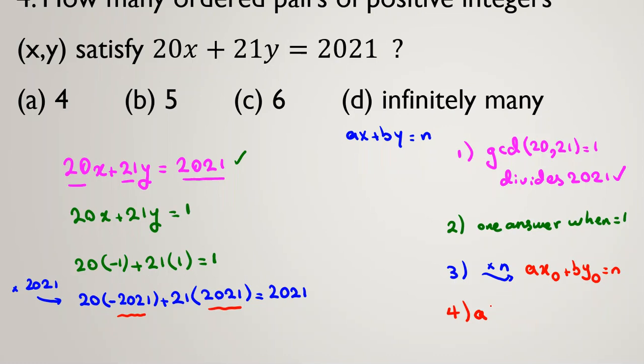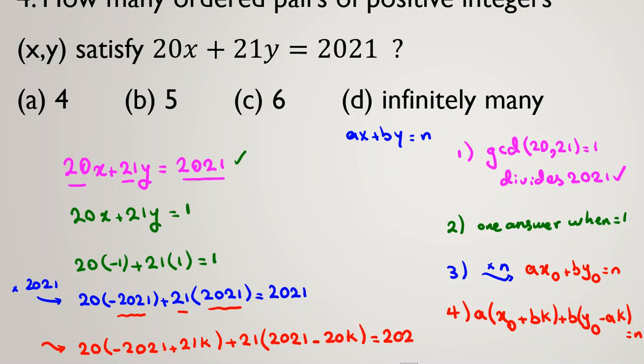Then, the general answer is this. AX0 plus BK plus BY0 minus AK for any K that is integer. So look, we have ABK, negative ABK, they will be canceled. If we apply it here, let me show. You should say 20, negative 2021, which is X0 plus BK. B is this, 21K. Plus 21 times 2021 minus 20K equal to 2021.